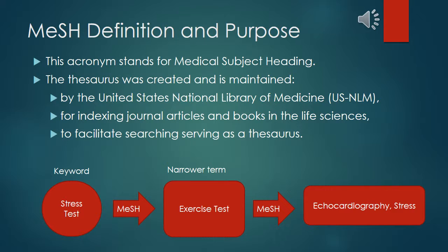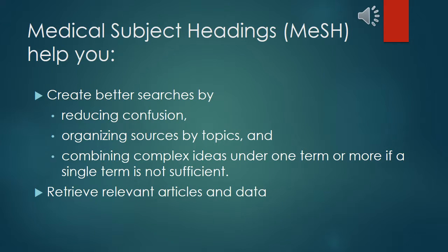By using MeSH terms, relevant data is retrieved based on concepts of an article. More than one heading may be used if a single term is not sufficient to describe the major concepts. MeSH will help you create better searches by reducing confusion, organizing sources by topics, and combining complex ideas under one term.